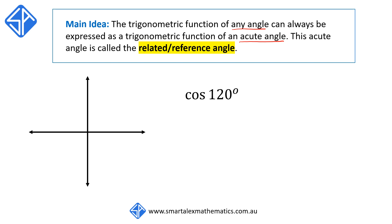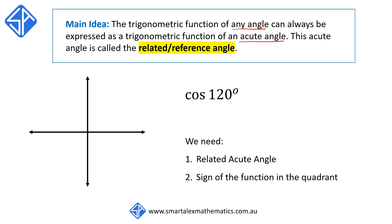Let's start off with an example. Here we've got cos 120 degrees and we want to express it as a cosine of an acute angle. There are two pieces of information we need: first, we need to find the related acute angle, and second, we also need to determine the sign of the function within the quadrant.